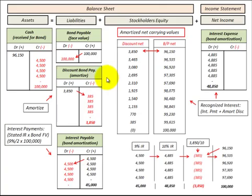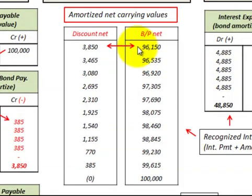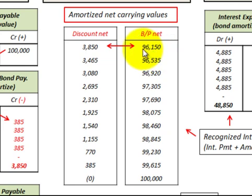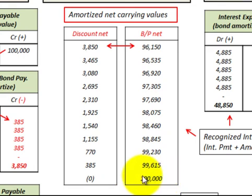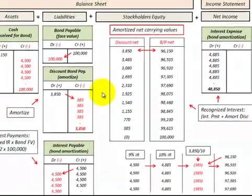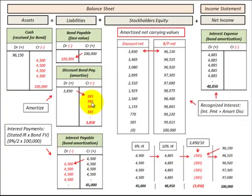Let's review what we've done: we've amortized the discount on bonds payable down to a zero balance, and by doing that we've increased the carrying value of the bond by the discount amount each period. We started at $96,150, and at the maturity date the carrying value is $100,000, which equals the face value.